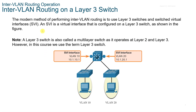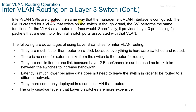Inter-VLAN routing on a Layer 3 switch is the modern method. It uses a Layer 3 switch and Switched Virtual Interfaces or SVIs. An SVI is a virtual interface configured on a Layer 3 switch — also called a multi-layer switch as it operates at Layer 2 and Layer 3, though in this course we only use the term Layer 3 switch. Inter-VLAN SVIs are created the same way that the management VLAN interface is configured. The SVI provides Layer 3 processing for packets sent to or from all switch ports associated with that VLAN.